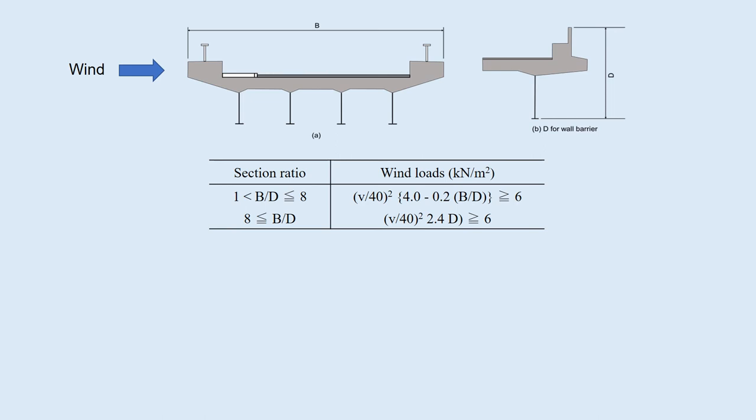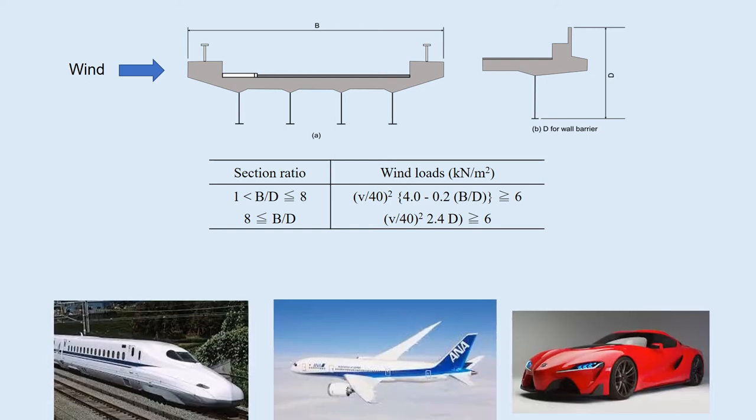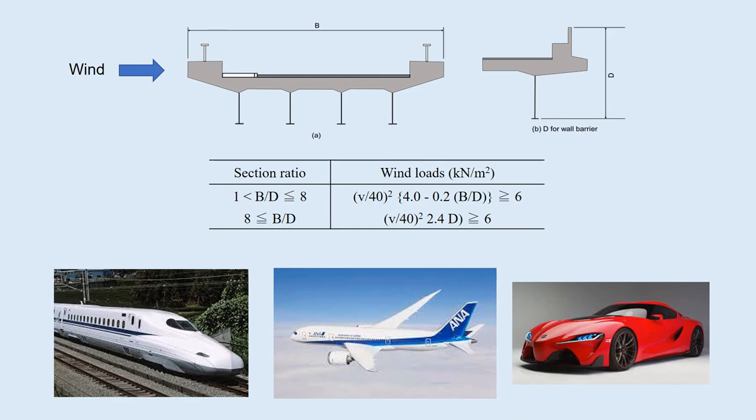A simple formula is adopted for the design wind load of a girder bridge, as shown in this table. It depends on the ratio of the bridge widths over the height. It is crucial to reduce the wind forces for trains, planes, and cars. The sharp and streamline shape are adopted as shown in these photos.